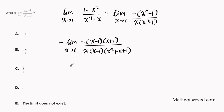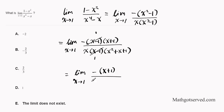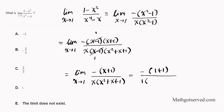Now let's simplify further. The factor (x minus 1) is common in both numerator and denominator, so they cancel. We are left with the limit as x approaches 1 of negative (x plus 1) over x times (x squared plus x plus 1). Now we can substitute x = 1: we get negative (1 plus 1) divided by 1 times (1 plus 1 plus 1), which is negative 2 over 3. That is the value of the limit.